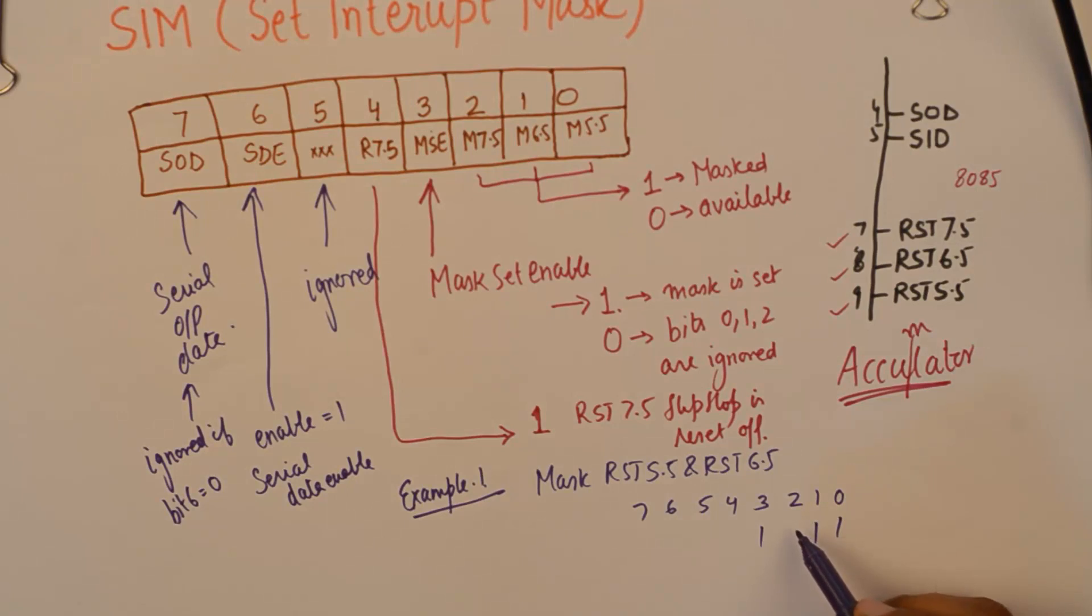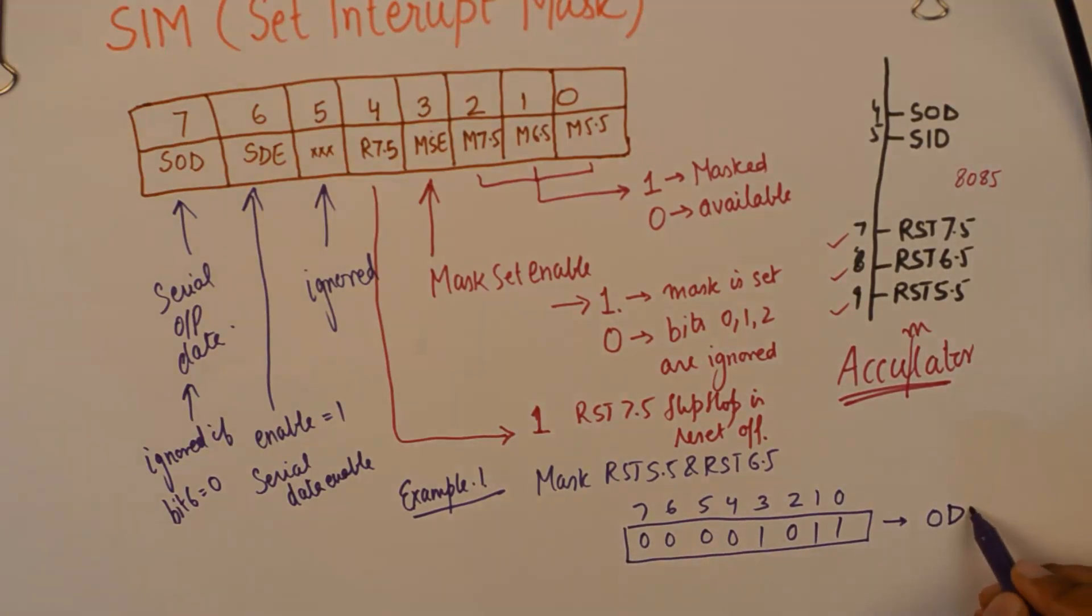And I do not wish to mask 7.5. So I will make it 0. And rest of everything will be 0. I do not wish to send any serial data. So my code becomes 0DH.